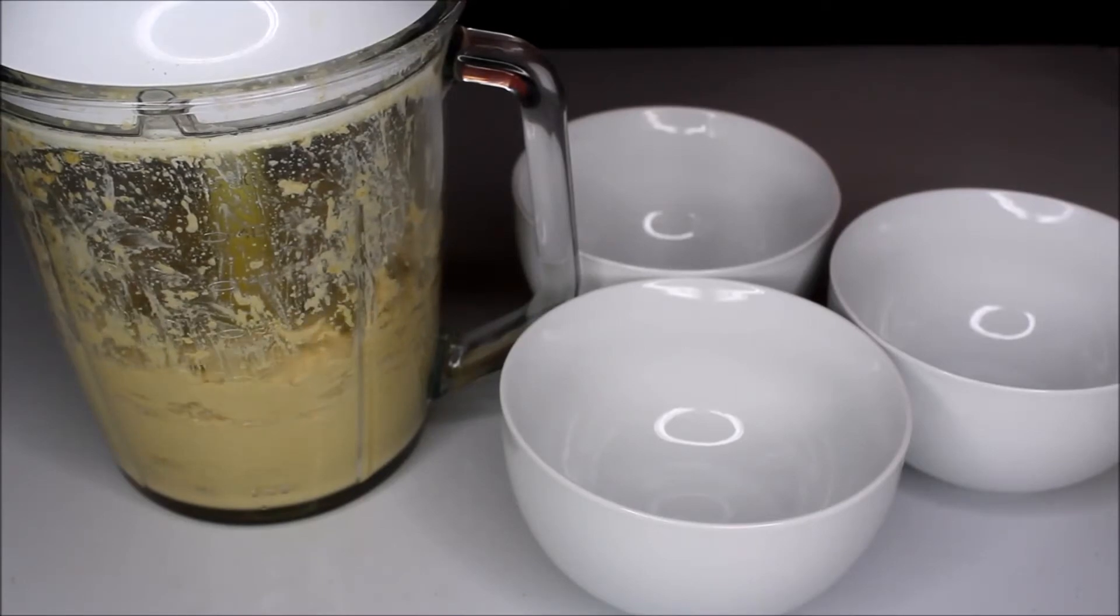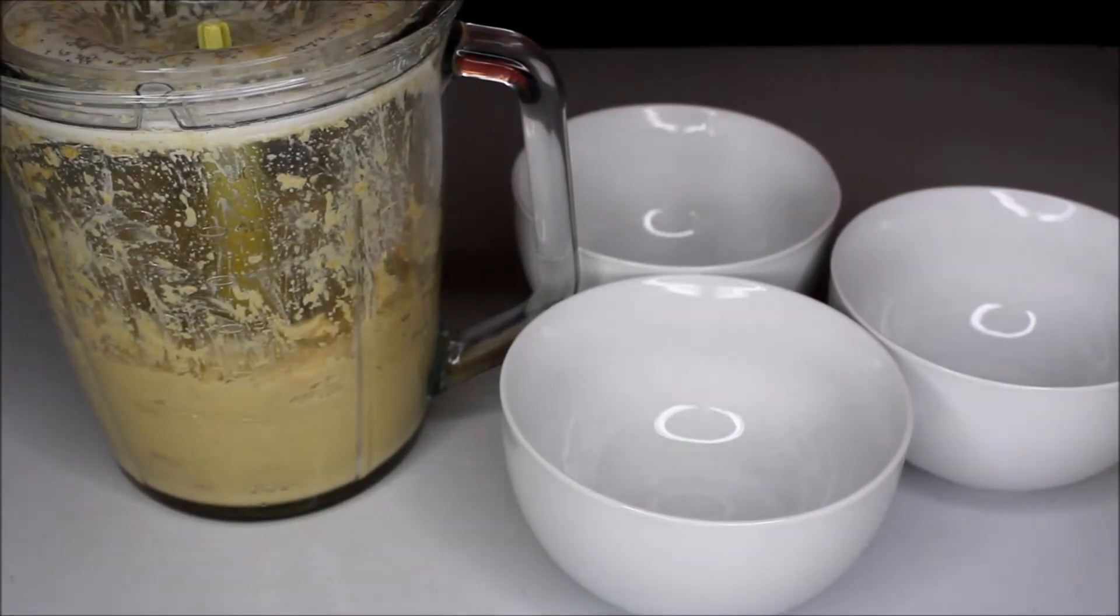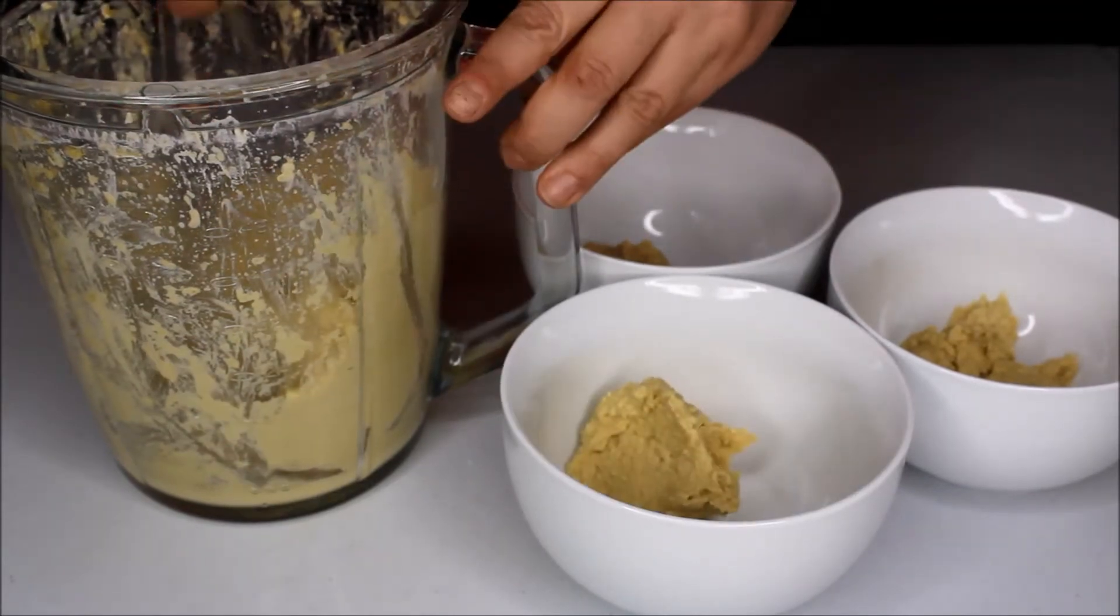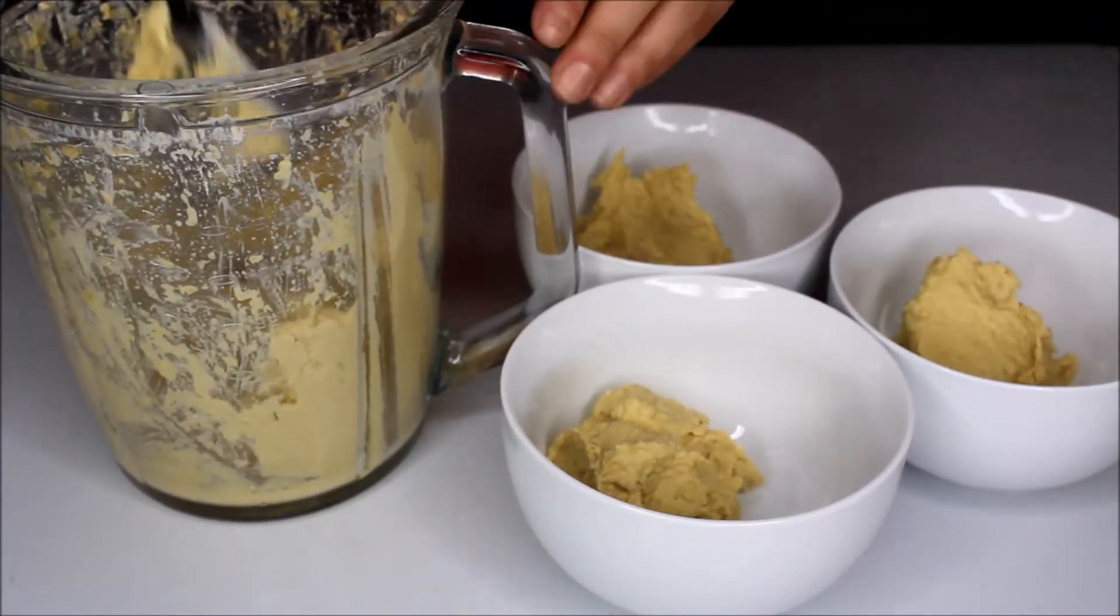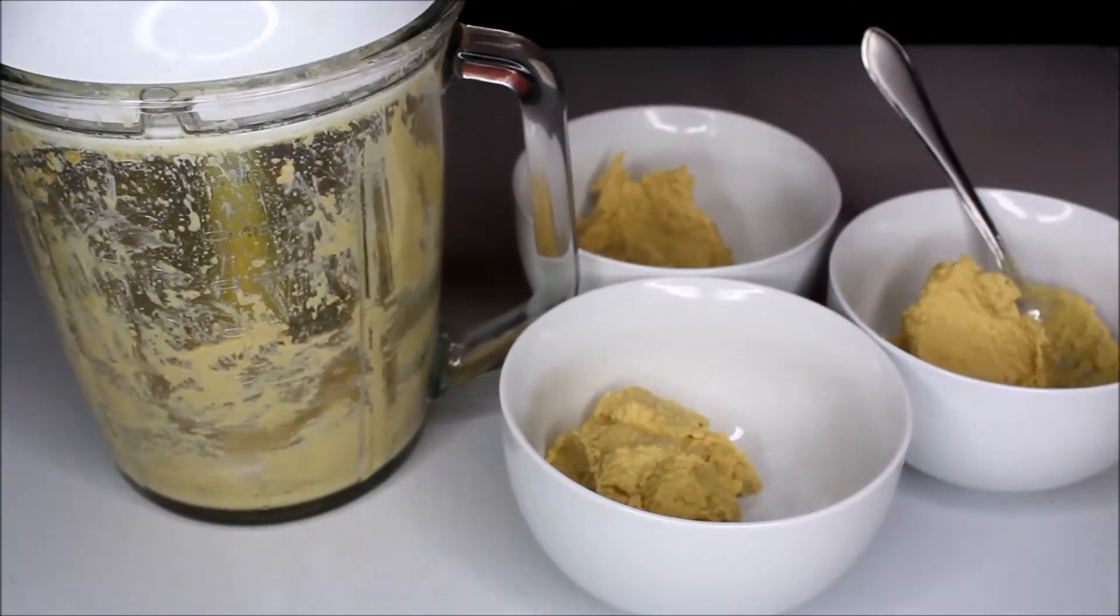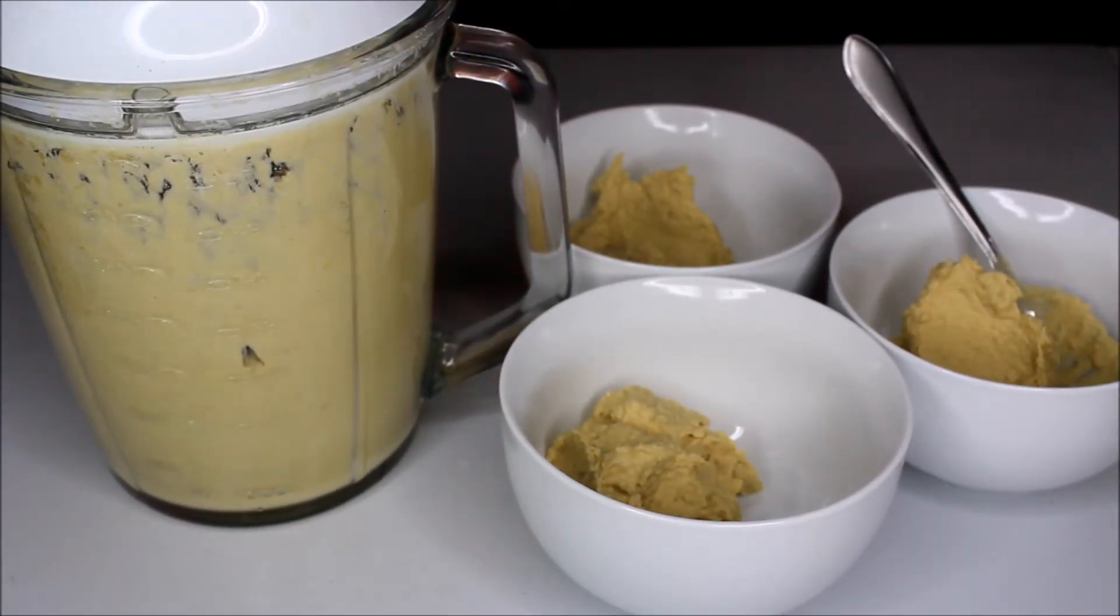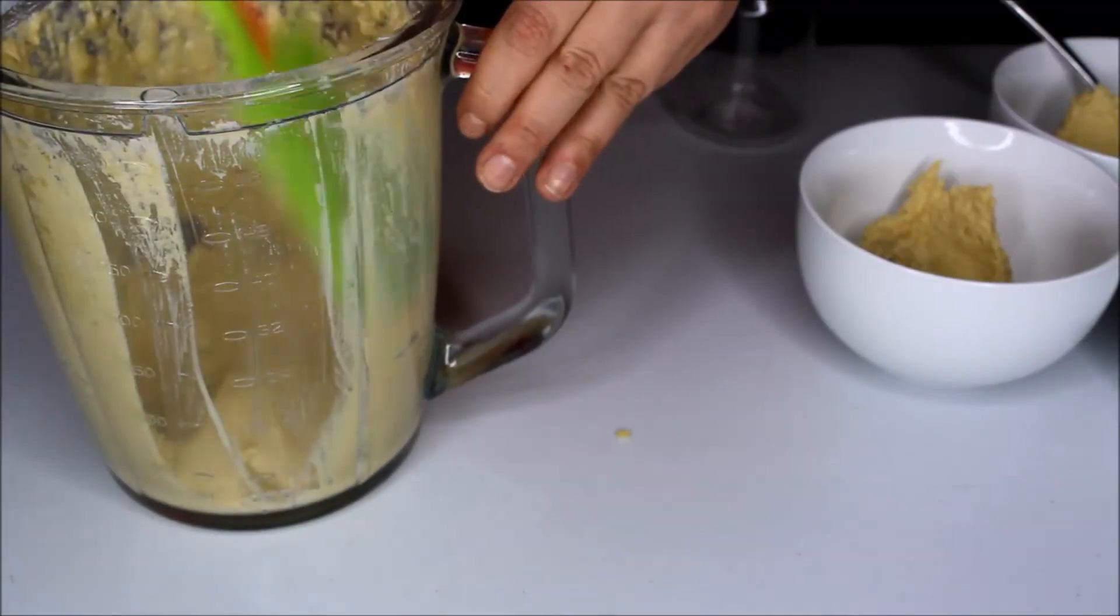And now I added one tablespoon of water and that's just so that it's nice and creamy. And now I'm going to separate them just so that I can make different flavors of the hummus and this will basically give you four different types. And now I added one more tablespoon of water just so this one is a little bit more watery because it was really thick.